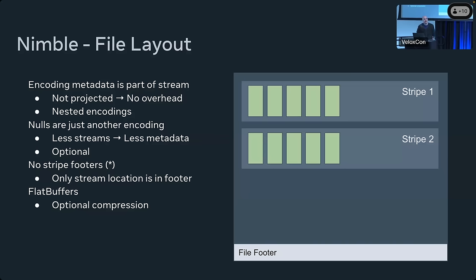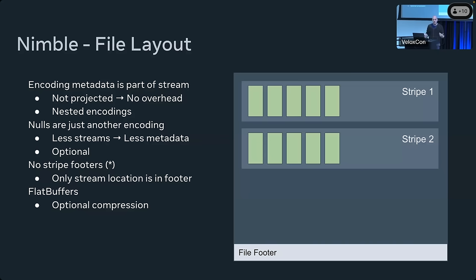For the metadata we do have, we use a serialization protocol called Flatbuffers by Google. Flatbuffers — as the name says — is a flat buffer. To access data inside it, you don't need to decode the entire thing; you have direct access via offsets into the data. This does mean the data is not compressed or encoded, so we have optional compression on top if it becomes very large. In practice, our compression threshold is one megabyte and it has never kicked in — the worst case I've seen is around 600 kilobytes on some really complex tables.